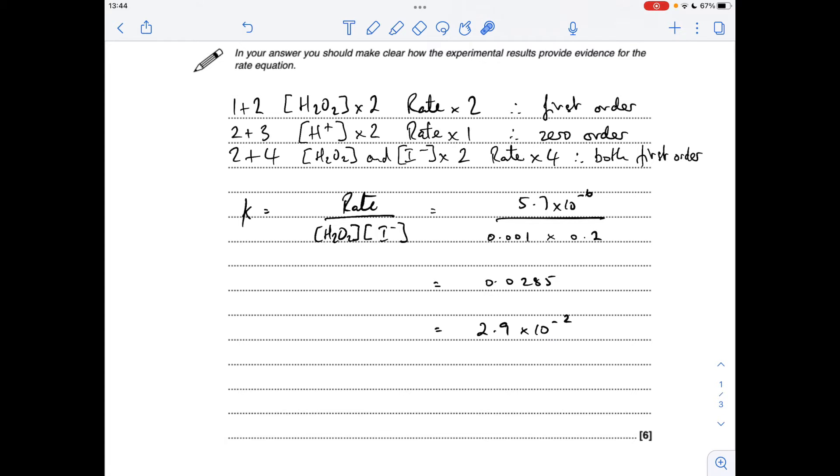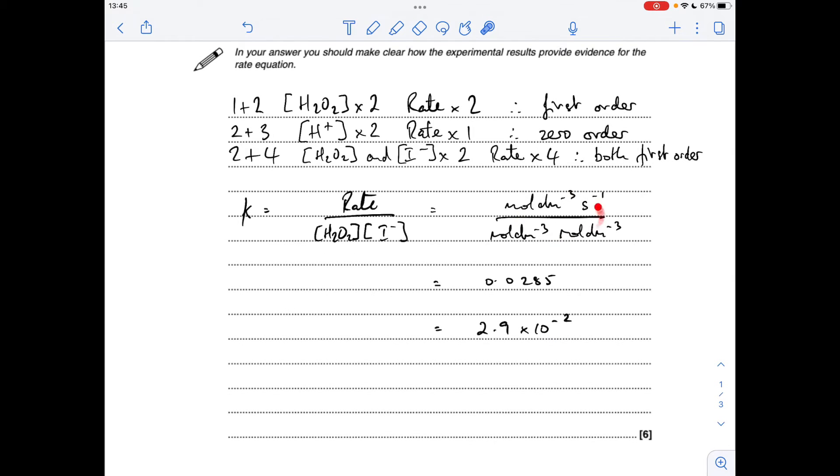I'll just quickly explain the units now. So I've replaced the numbers with the units of the things in the K expression. And we'll just cancel that moles per decimeter cubed with one of them. And then we'll just take these up to the top and flip the sign. So we've got dm to the 3, moles to the minus 1, seconds to the minus 1.